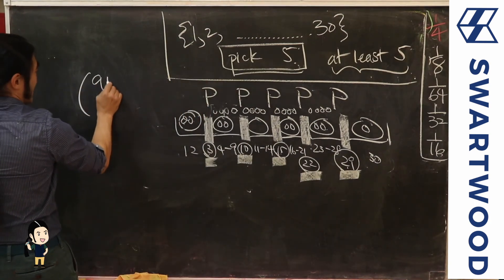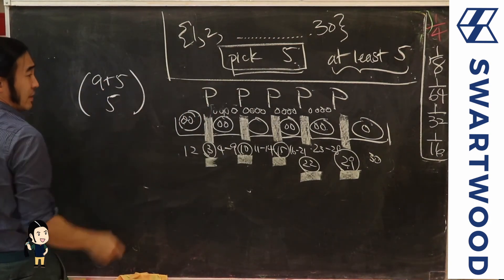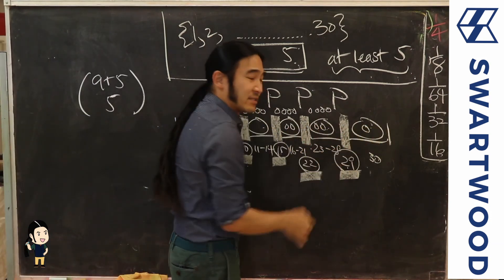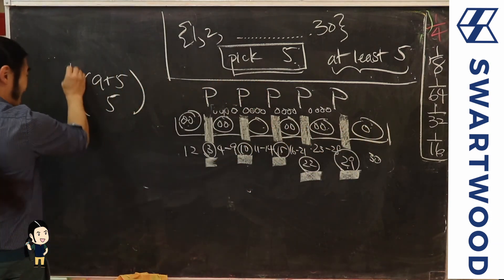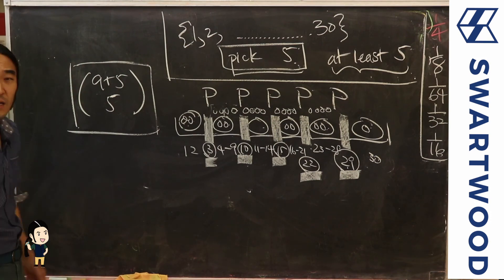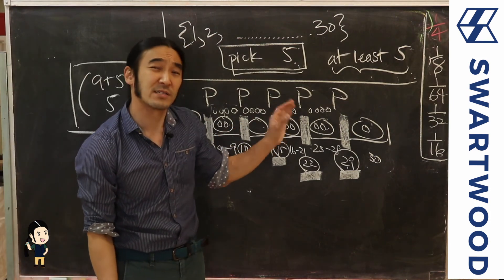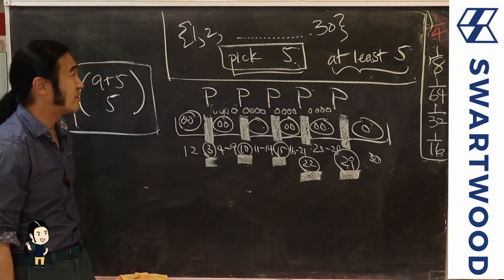Again, we have our nine guys and we place them down. One two three four five six containers need five dividers, so this is it. It's actually a pretty nice way of visualizing a problem like this which otherwise I think would be pretty complicated.